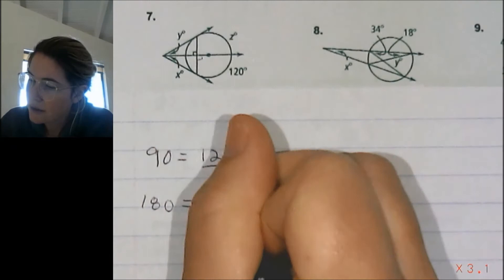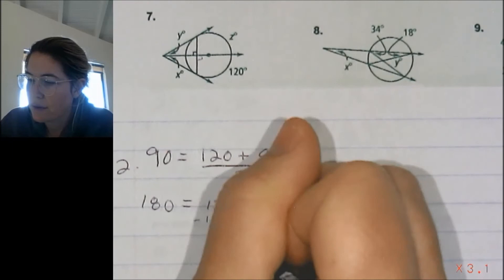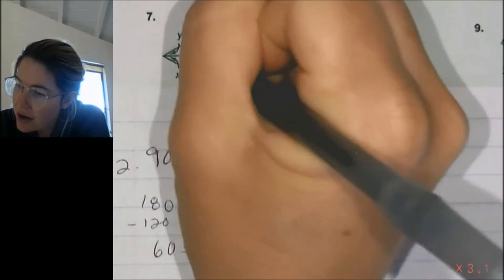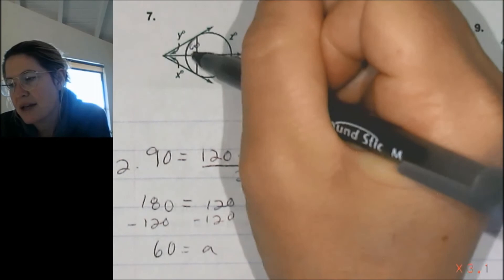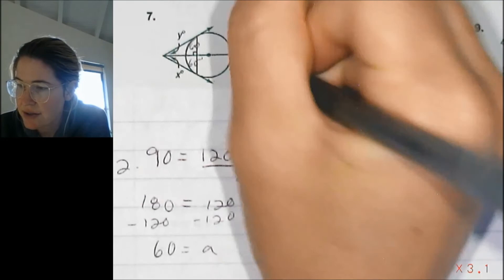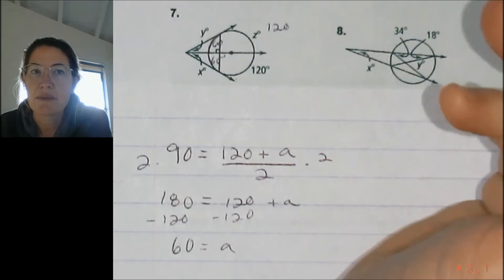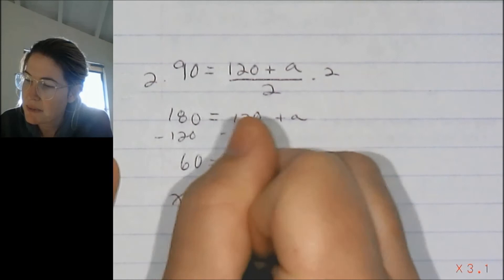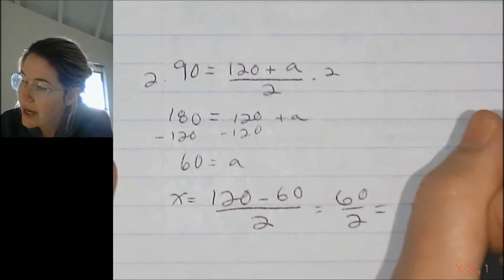So: 180 equals 120 plus arc a — multiplying both sides by 2 first to get that. Subtracting 120, we get arc a equals 60. Also, this chord is perpendicular, which means it cuts the other arc in half, so both of those arcs are 60, and the arcs on the other side are both 120. So z equals 120. To find x and y — they're equal by symmetry — it's the big arc minus the small arc divided by 2: (120 minus 60) over 2 equals 60 over 2, so x and y both equal 30.